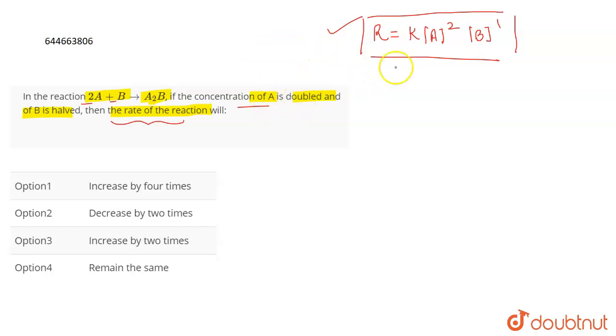When we are doubling the concentration of A, now R' will be K into 2A squared because now we are doubling the concentration of A and we are halving the concentration of B. So this will be B by 2. So what will happen to the rate now?